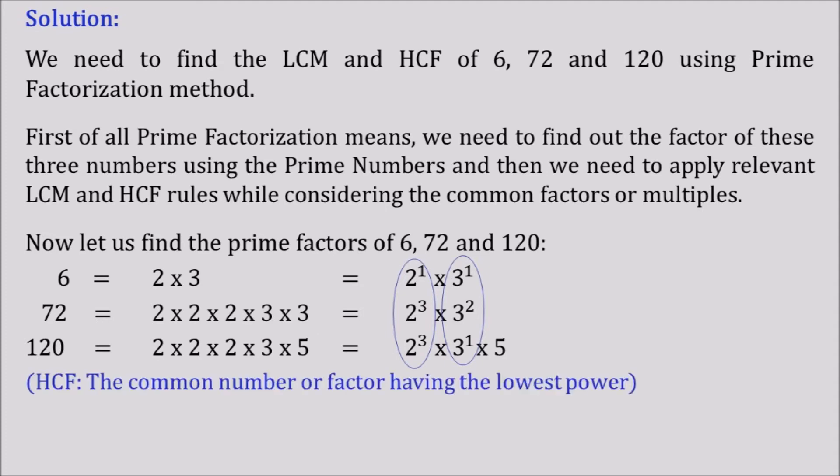So what is HCF? The common number or factor having the lowest power. Here the common factors for these three numbers are 2 and 3. So now we are going to consider the lowest power among these common factors. So lowest power for 2 is 2 to the power 1 and lowest power for 3 is 3 to the power 1.